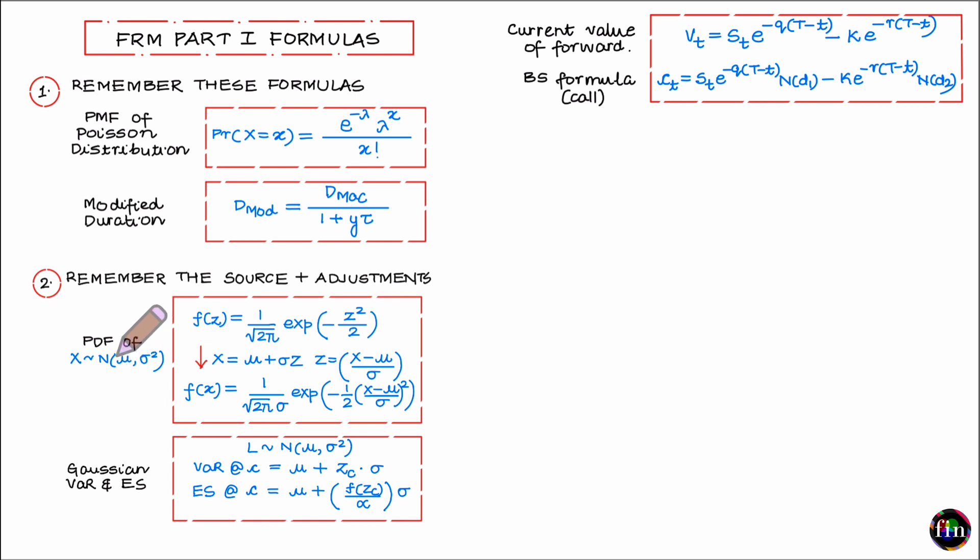For example if I were to ask you to write down the pdf, the density of x, a normally distributed random variable with mean mu and variance sigma squared, well this is the formula. But instead of remembering this formula I would rather remember some kind of a template or some kind of a source formula and alongside the adjustments that need to be made to start from the source formula and finally arrive at my target formula.